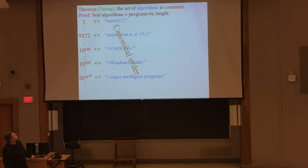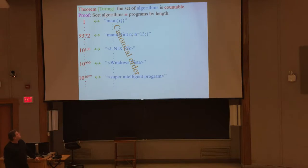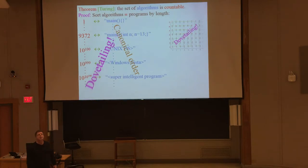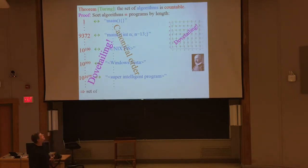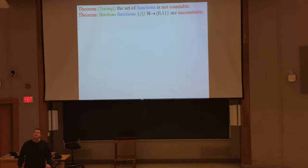Even a super AI program that hasn't been invented for a thousand years is already on that list — we just haven't discovered it yet. That's similar to the dovetailing argument of matching integers to rational numbers, based on Cantor's work. The set of functions, on the other hand, is not countable.